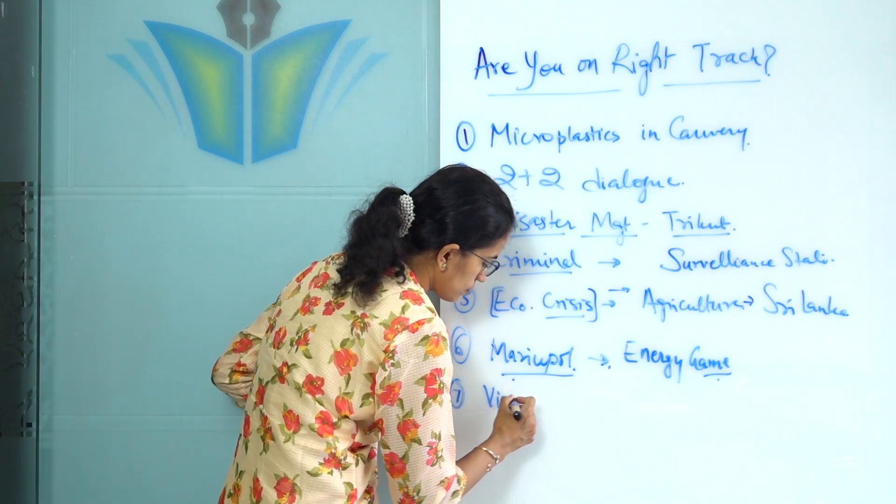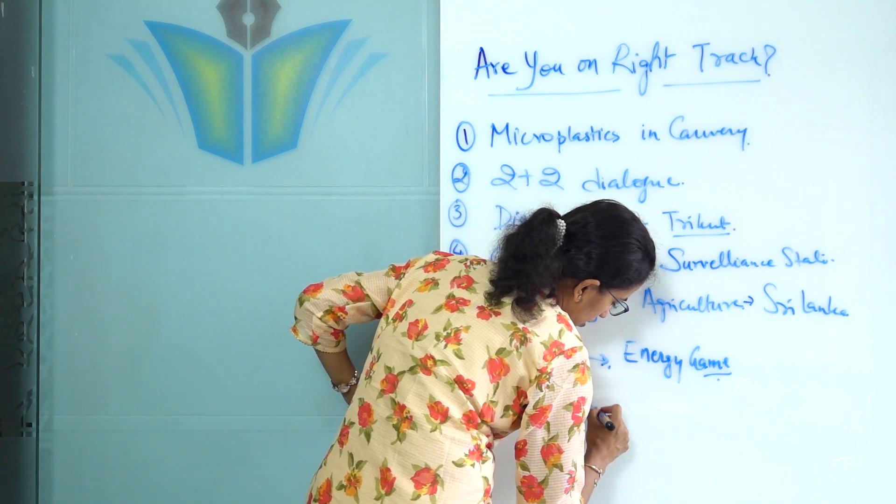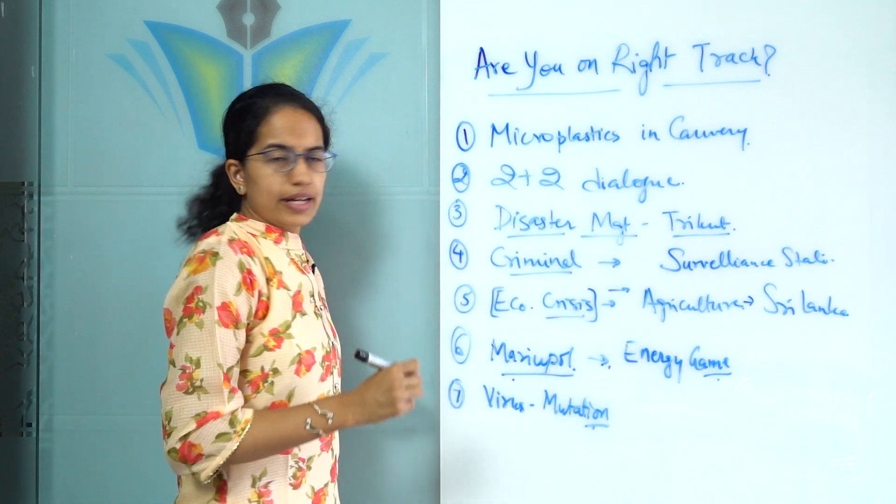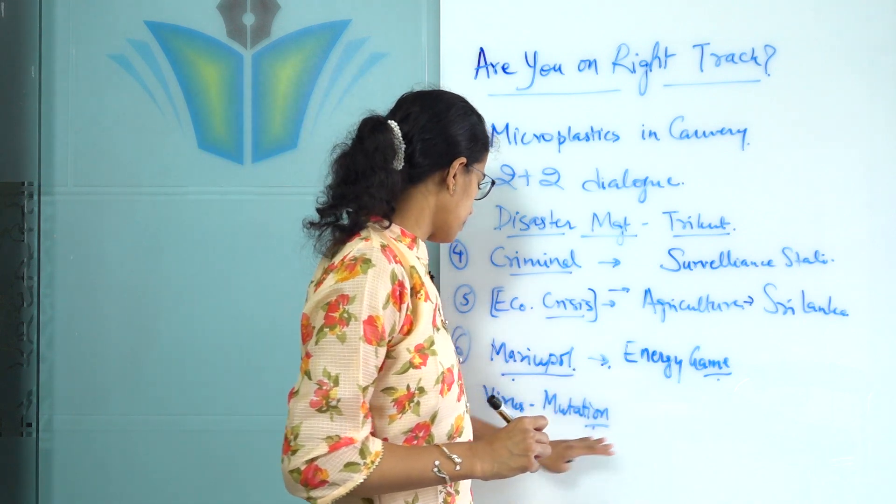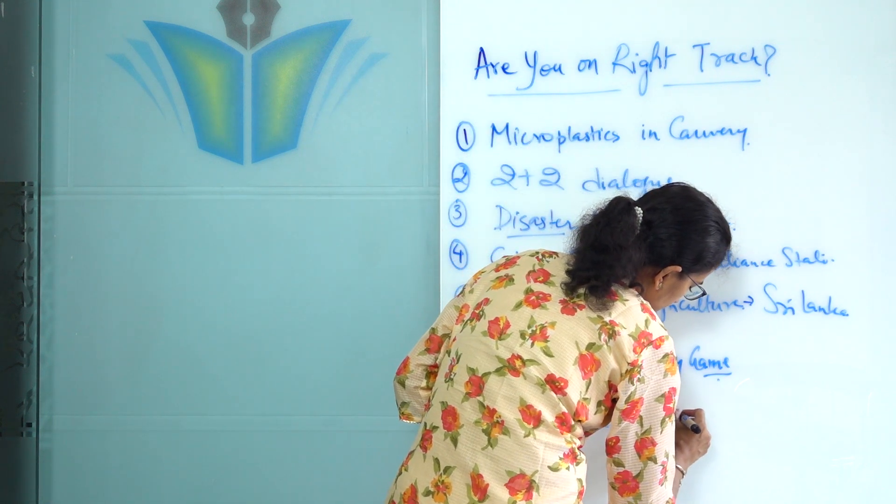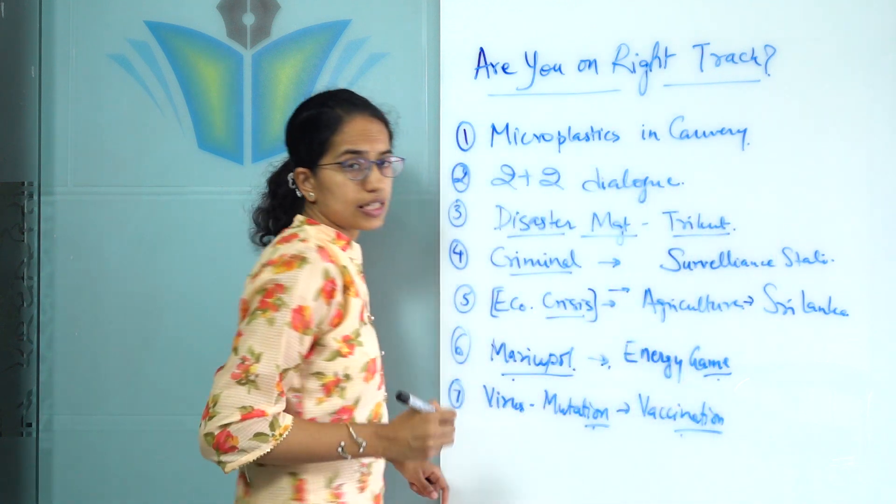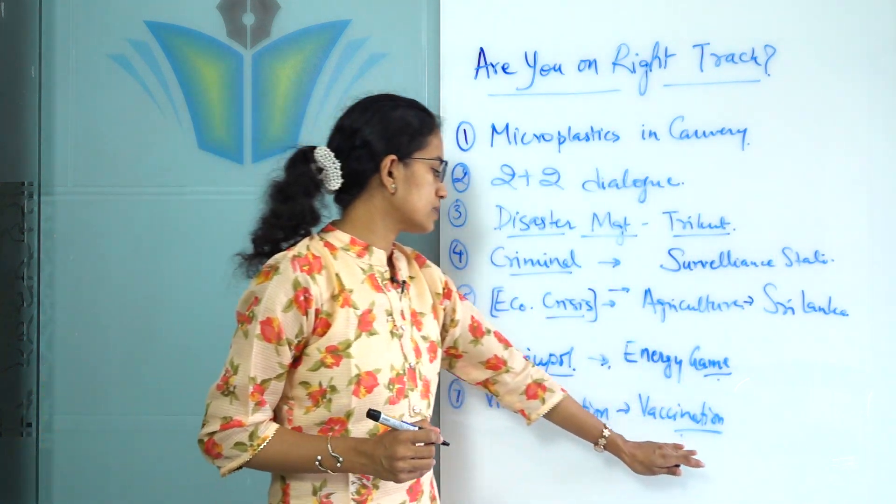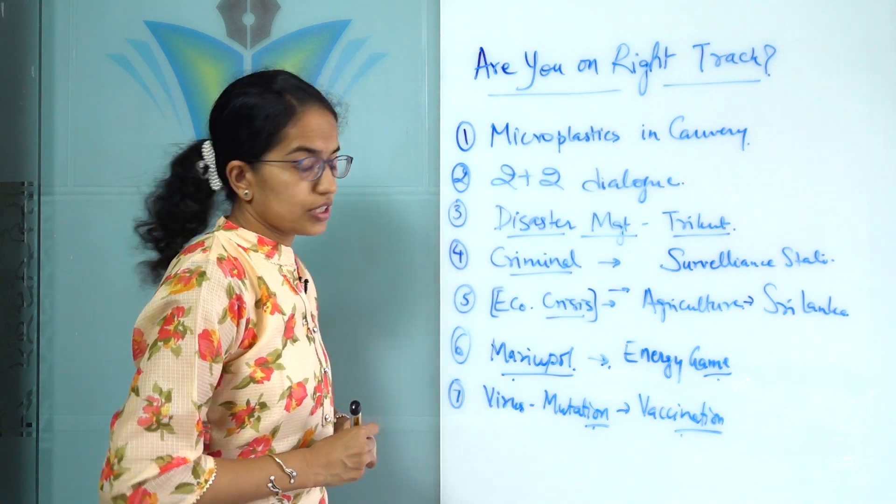So virus and its mutation becomes important for your prelims. Things related to RNA technology, recombinant technologies become important, and then the various mutations, the vaccinations and the types of vaccinations. So if you have covered the RNA vaccine, the DNA vaccine being released by Zydus, so all of these are the important topics for this week.